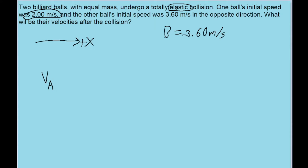And that equation looks like this. It says that the initial speed of one of the balls minus the initial speed of the other: V_A minus V_B is equal to the negative of V_A prime, that's the final speed of A, minus V_B prime.